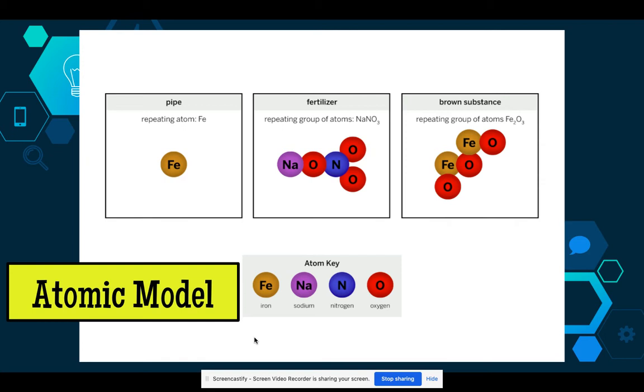Looking at this atomic model or the atomic structure that's pictured here of these different substances, the pipe looks like just one single atom of iron. So it's just one atom of Fe or iron.